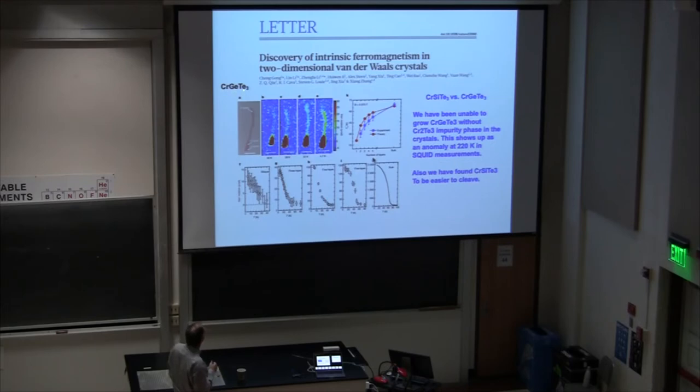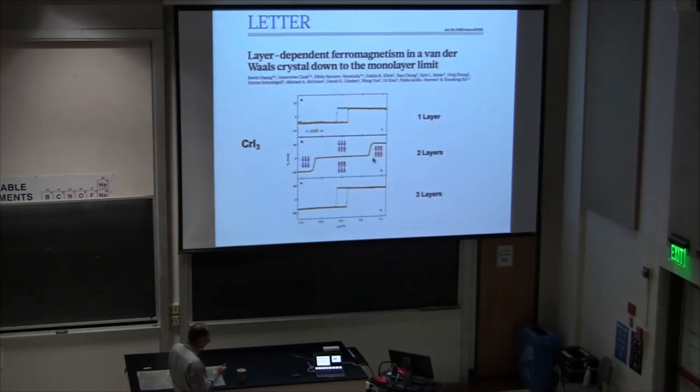Quite a bit has been done with various van der Waals materials characterizing the magnetism over the past few years. This work was on the chromium germanium tellurium-3. We actually like the silicon version better. Another material was this chromium triiodide. This was actually grown first by Michael McGuire, who's at Oak Ridge in Brian's group. Some really nice work was done in Xiaodong Zhu's group at the University of Washington. All this was done with a Kerr effect, basically, magneto-optical Kerr effect measurements. You can see hysteresis loops.